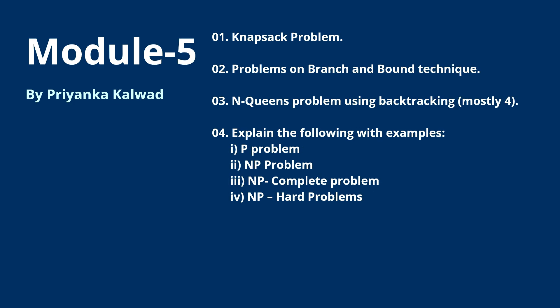From Module 5, we have four questions: the first is the Knapsack problem, the second is problems on branch and bound, the third is the N-Queens problem using backtracking — mostly they ask for four queens. The fourth is to explain certain definitions with examples. If you are focusing only on passing from Module 5, it is very important to do the first three questions, as they carry 10 marks each. Please focus on these three problems.